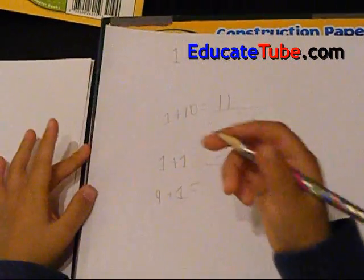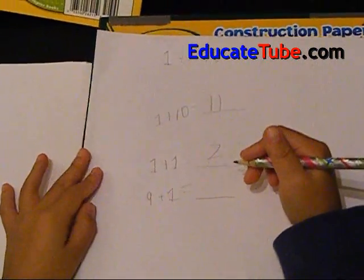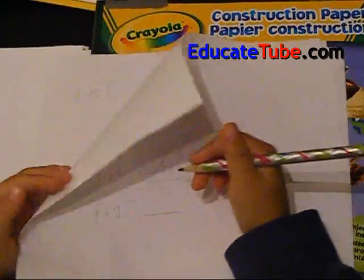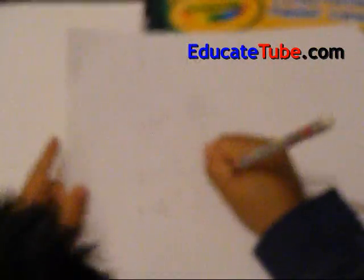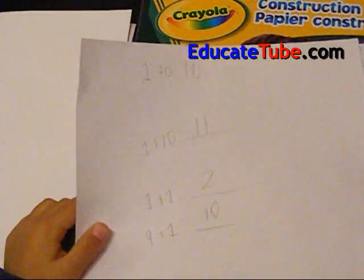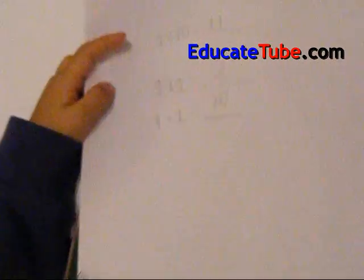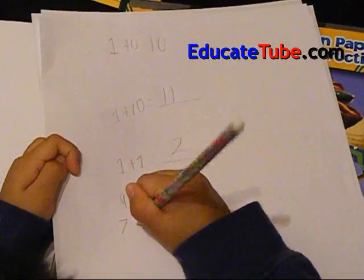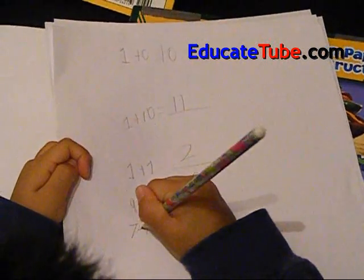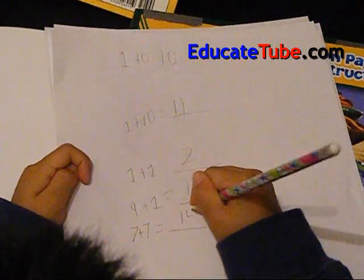It gets harder and harder when I turn the next page. It might get harder and complicated. I know it's a little complicated. Let's do a harder one. Let's say 7 plus 7. 7 plus 7. That equals 14.